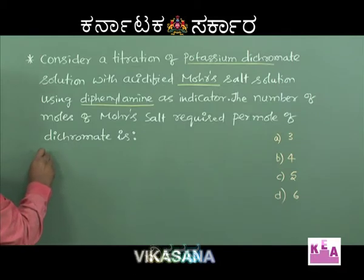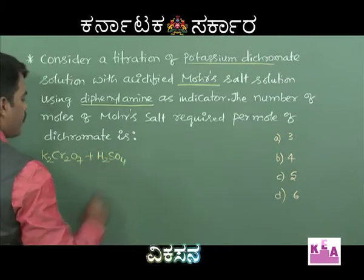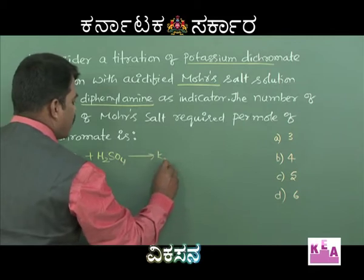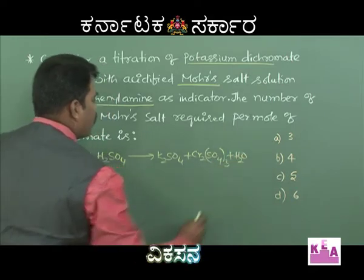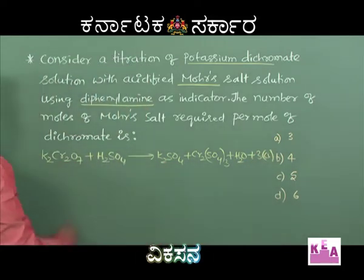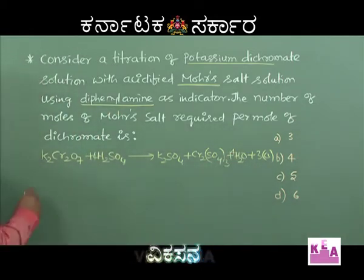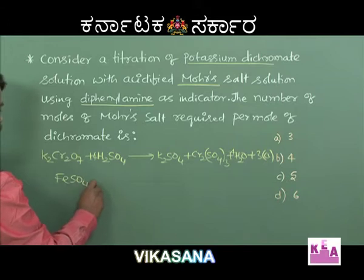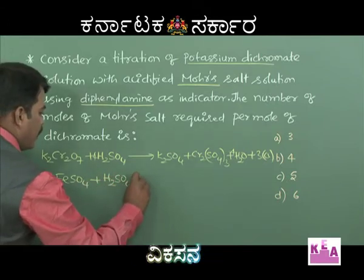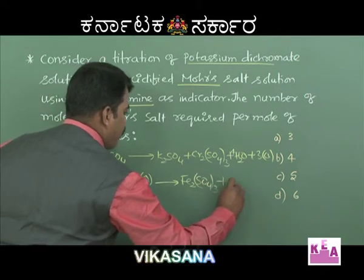What is happening here? K₂Cr₂O₇ in acidic medium (H₂SO₄) gives rise to K₂SO₄ plus Cr₂(SO₄)₃ plus 4H₂O plus 3 nascent oxygen. This nascent oxygen is used for the oxidation of ferrous sulfate in Mohr salt. FeSO₄ in acidic medium gets oxidized to Fe₂(SO₄)₃ plus H₂O.